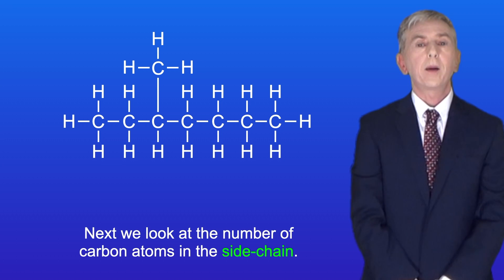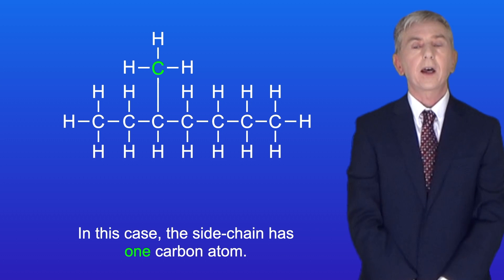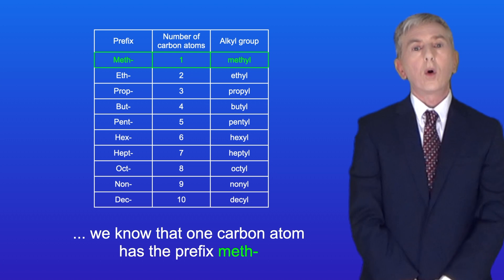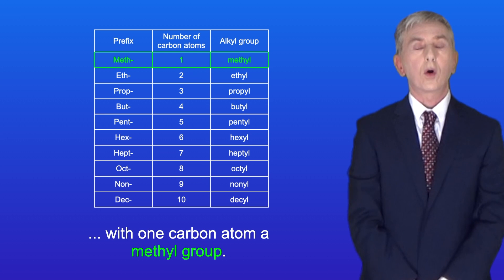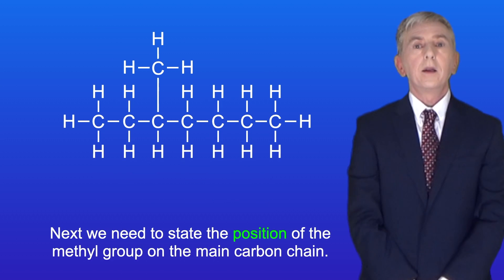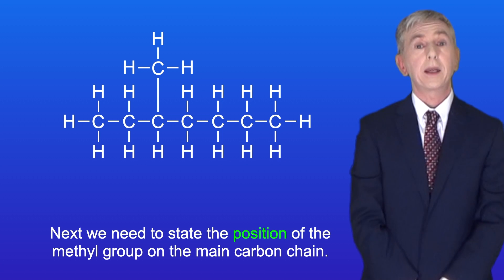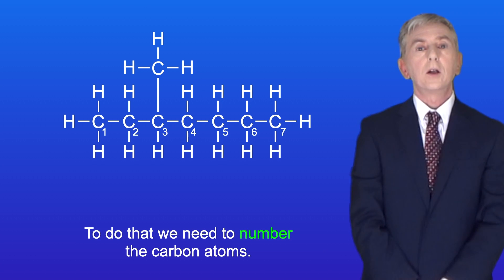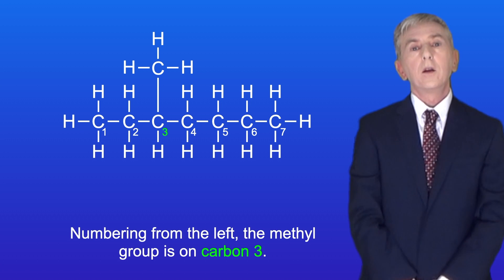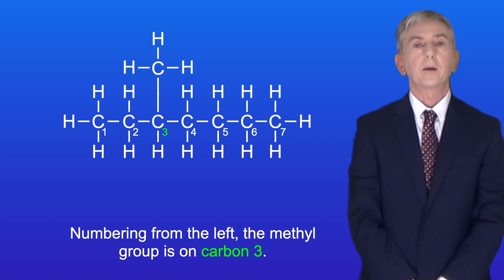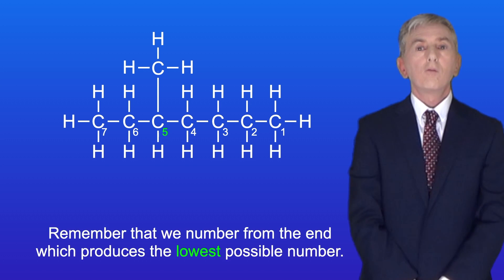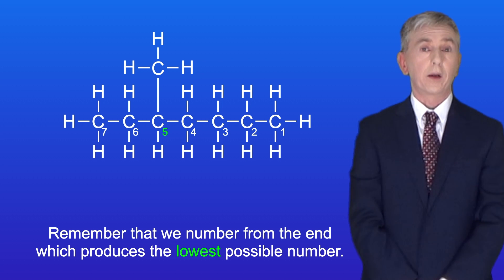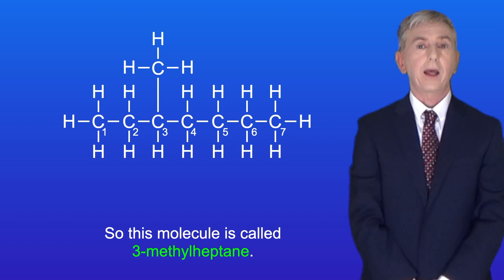The alkane with a 7 carbon chain is heptane. Next we look at the number of carbon atoms in the side chain. In this case the side chain has one carbon atom. Going back to our table, one carbon atom has the prefix meth, which means we call a side chain with one carbon atom a methyl group. Next we need to state the position of the methyl group on the main carbon chain, so we number the carbon atoms. Numbering from the left the methyl group is on carbon 3; numbering from the right it's on carbon 5. We number from the end which produces the lowest possible number, so this molecule is called 3-methylheptane.